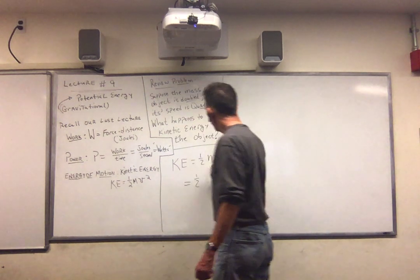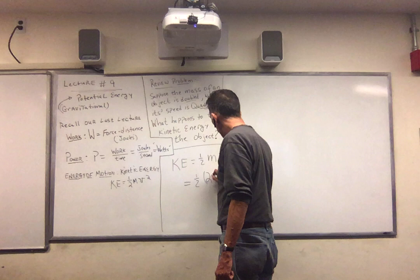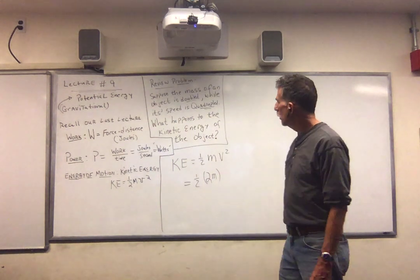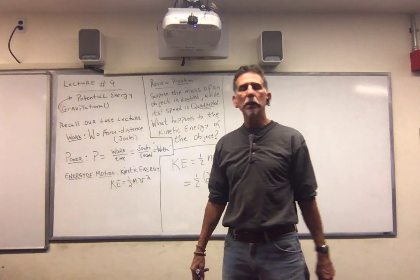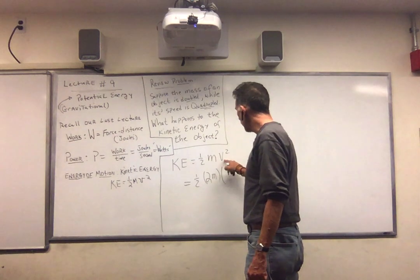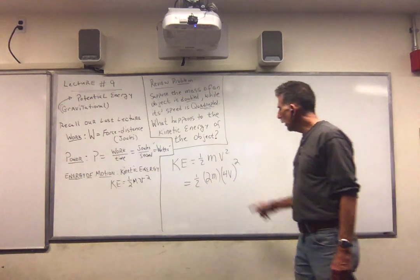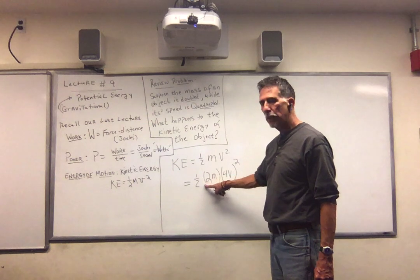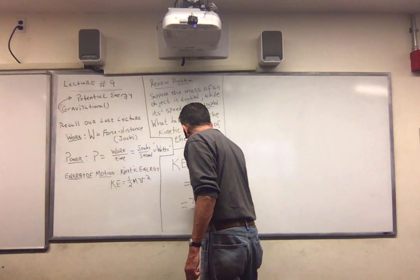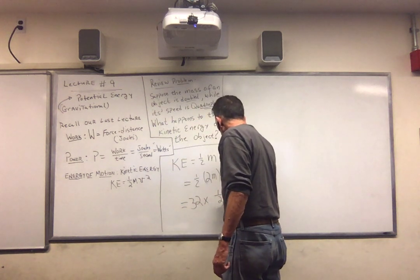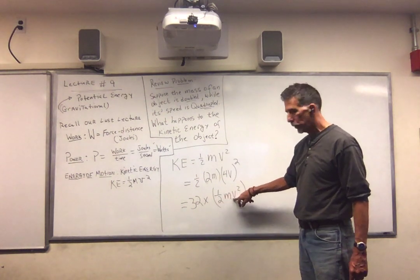So that's one half. What are we doing to the mass? We're doubling it. So instead of m now, we have 2m. What's happening to the speed? Well, the speed is quadrupled. Quadrupled means it's multiplied by 4. So here we put, instead of v squared, we put 4v, and then we square that. Now, 4 squared is 16. 2 times 16 is 32. So watch this. We get 32 times one half mv squared. Remember, 1 half mv squared is kinetic energy.